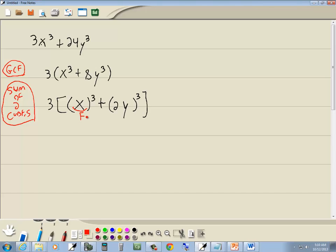Now I'll label what's inside my first set of parentheses as f for first, and what's inside my last set of parentheses as l for last. Our formula for the sum of 2 cubes is f plus l times f squared minus fl plus l squared.